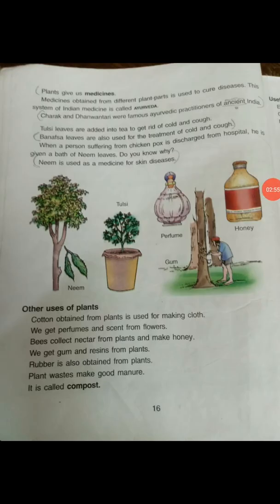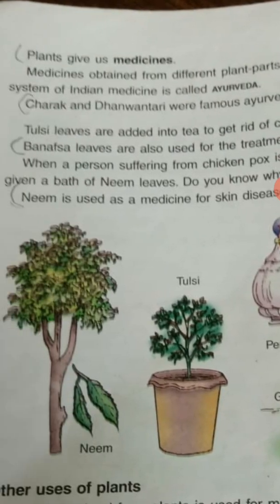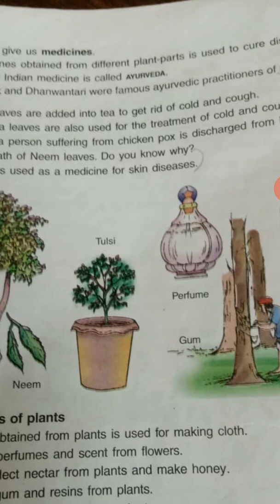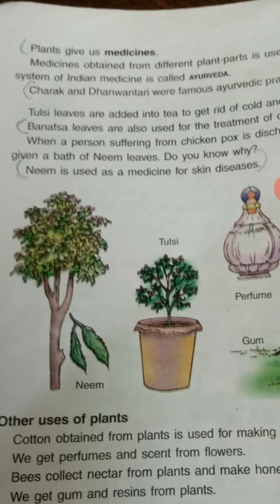Plants also give us medicine. Most of you may have a tulsi plant at home, and neem trees grow all around. Charak and Dhanvantri were famous Ayurvedic practitioners — ancient medical practitioners of Ayurveda. Can you find out the full form of AYUSH and write it in your copy?